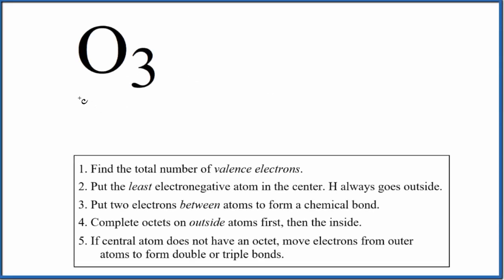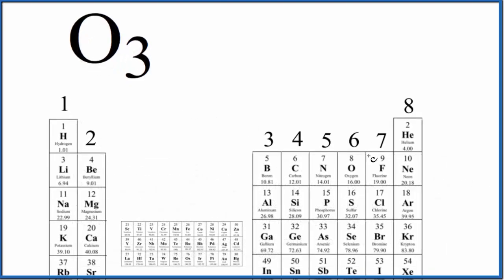Let's draw the Lewis structure for O3, which is ozone. The first thing we do with Lewis structures is count the valence electrons. Using the periodic table, we find oxygen in group 16, sometimes called 6A. Oxygen has six valence electrons.